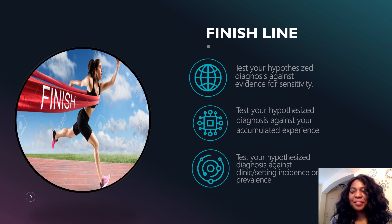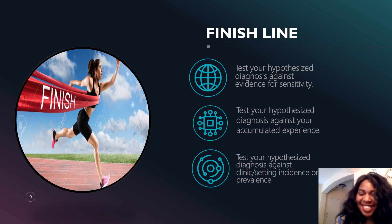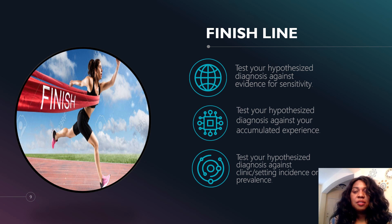There are still some more important steps. We have a primary diagnosis of possibly mild intermittent asthma. You would test your hypothesized diagnosis against evidence for sensitivity. A disclaimer: you might not have time to do this in every clinical setting, but this is the real process of coming up with a differential diagnosis — it must be tested against evidence.